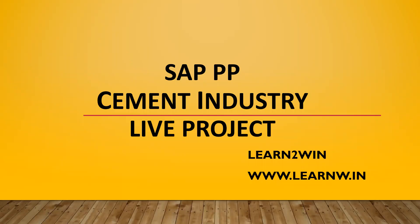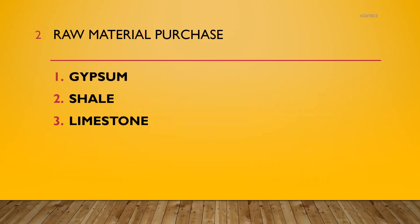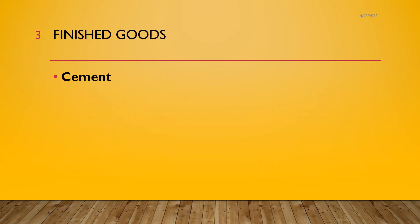Hello everybody, Swaminath here. Today we are going to see the process in the cement industry — how cement is manufactured. The raw materials involved are gypsum, shale, and limestone. All three raw materials are going to be sent to the production line and we are going to get the finished goods shipped.